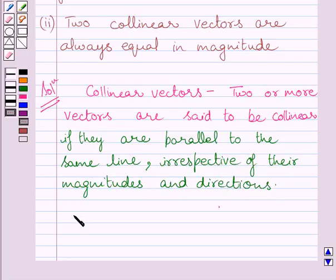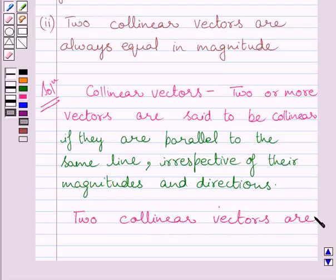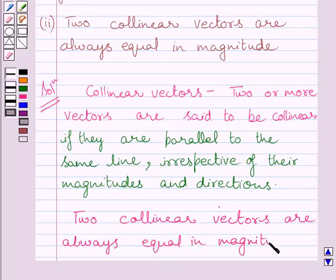Now we are given two collinear vectors, and we have to find if this statement is true or false.